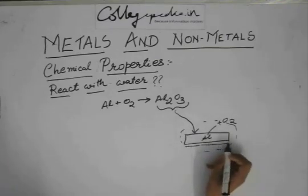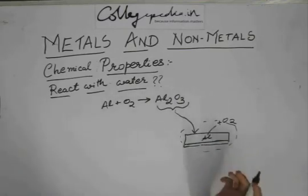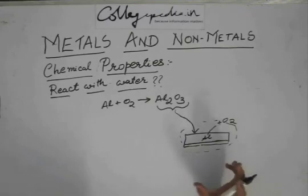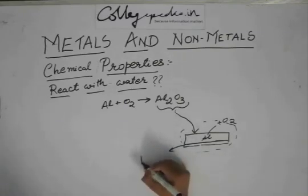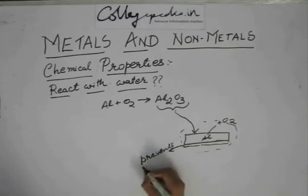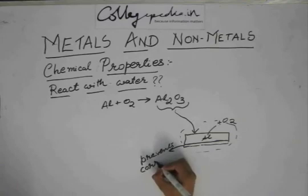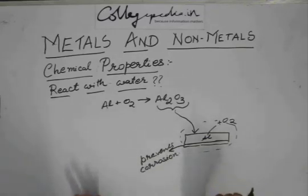Slowly it will just cover this aluminum rod. You have aluminum and you have a thick layer of Al2O3 surrounding the rod. This thick layer of Al2O3 prevents corrosion of aluminum and gives a very good shine to the aluminum, and it also protects the aluminum inside it.